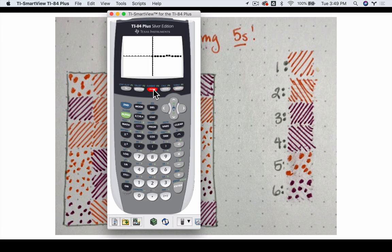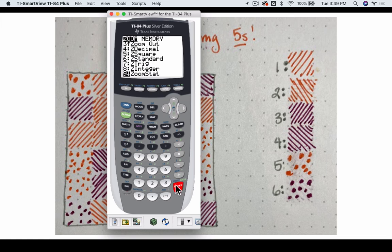So what I do is I go to zoom. If I scroll down, I want to pick choice 9. That is my zoom stat. And that will help me zoom around the statistics that I've just graphed. And there is the graph of my binomial distribution.